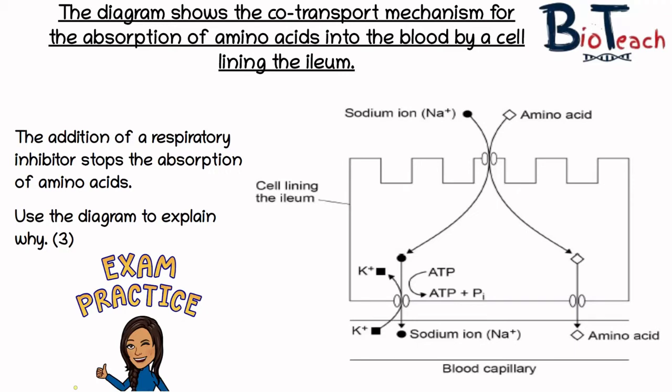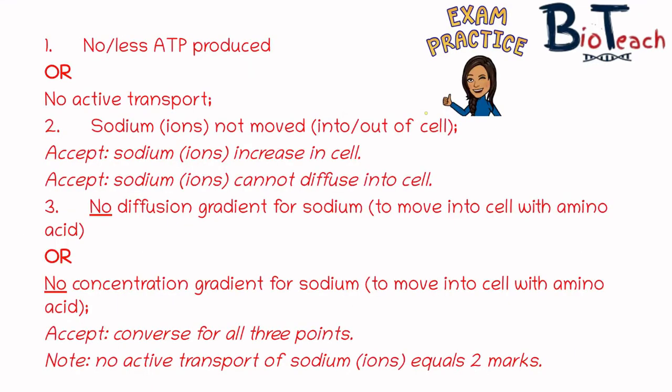The respiratory inhibitor is a chemical that stops respiration, and we know that respiration generates ATP. The process of co-transport uses ATP to pump the sodium ions out of the cell in the ileum. If the sodium ions aren't pumped out, then we won't be able to transport the amino acids back in, because there won't be a diffusion gradient created to allow that co-transport to take place. So if there's no respiration, there's no ATP produced and no active transport — meaning sodium ions would not be moved out of the cell, and therefore there would be no diffusion gradient for sodium ions to move back in and carry the amino acids with them.